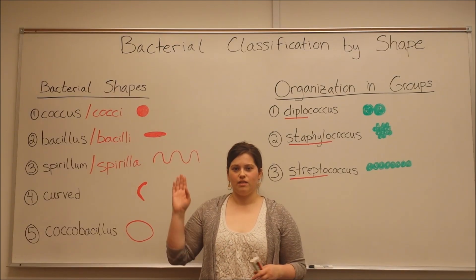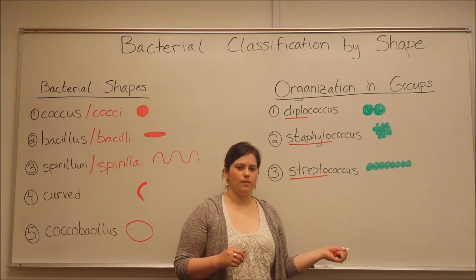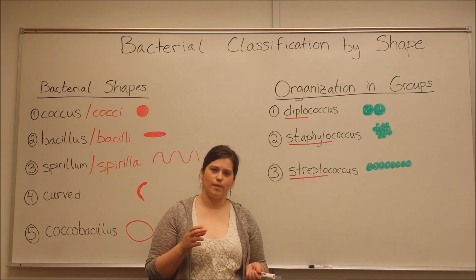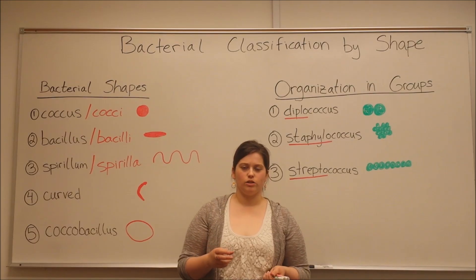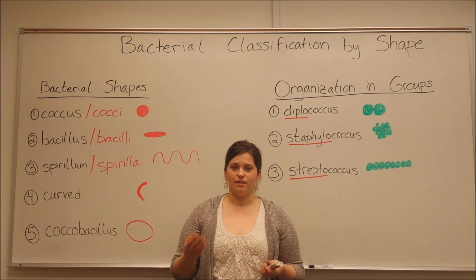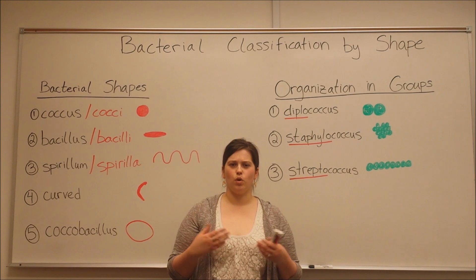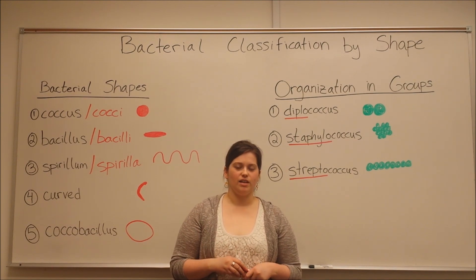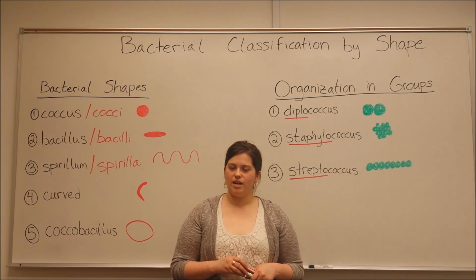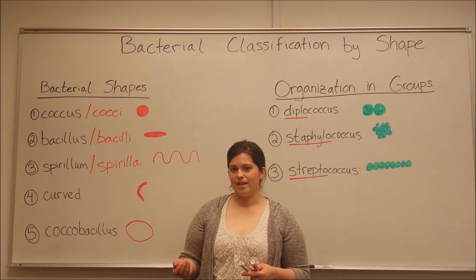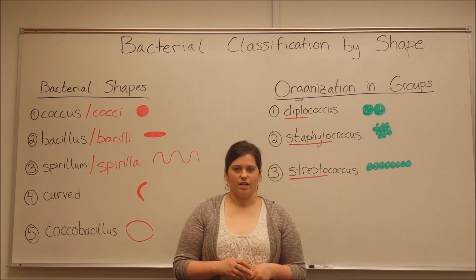Often you need shape and organization information, as well as differential stain information. This means staining the bacterial cells on the microscope slide with something like the Gram stain or the Acid Fast stain, to get more information about what kind of bacteria is causing the infection. For more information about the Gram stain or Acid Fast stain techniques, you can see my separate videos that go into more detail on those procedures.